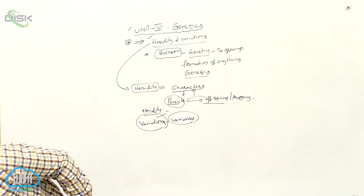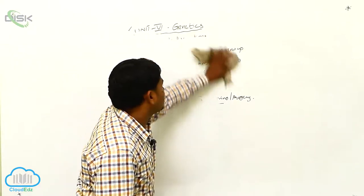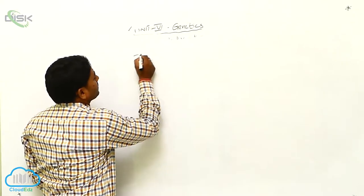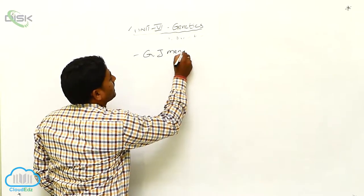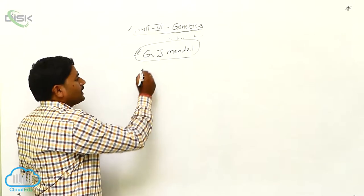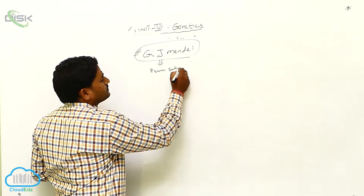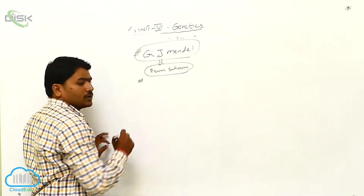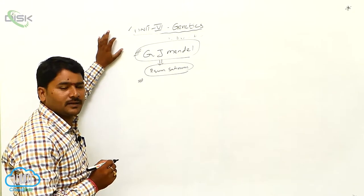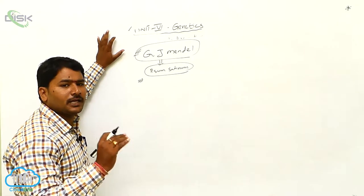In the field of genetics, the first research was started by the scientist Mendel — Gregor John Mendel — who was a famous genetic scientist. He worked on the Pisum sativum plant and proposed many theories and concepts. Some Mendelian principles include the law of dominance, the law of segregation, and the law of independent assortment.